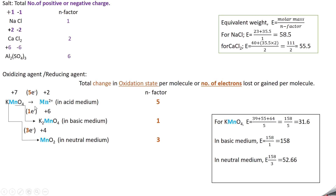In neutral medium, KMnO₄ is converted to MnO₂. For MnO₂: 2 oxygens give −4, so Mn is +4. The change in oxidation state from +7 to +4 is 3, so only 3 electrons are involved and N factor is 3.